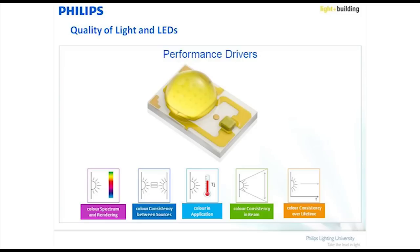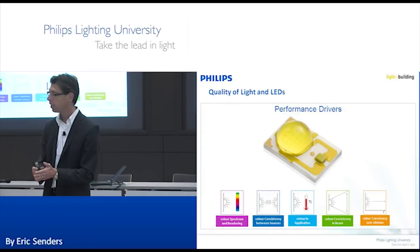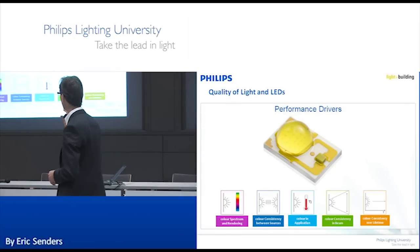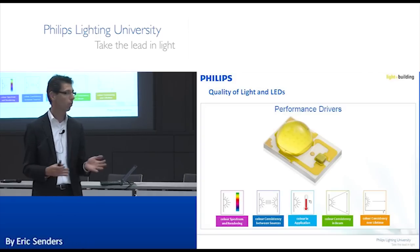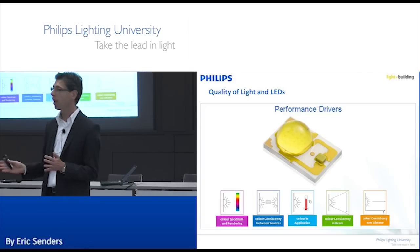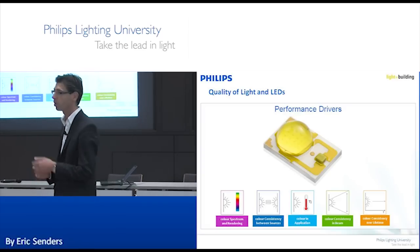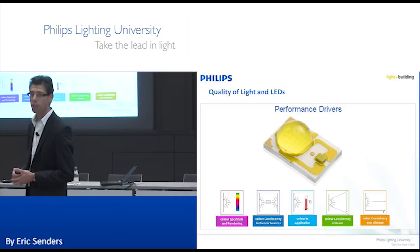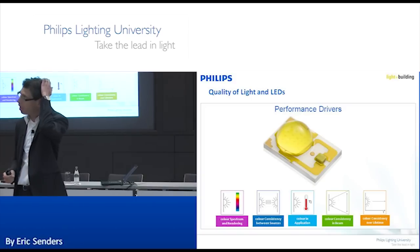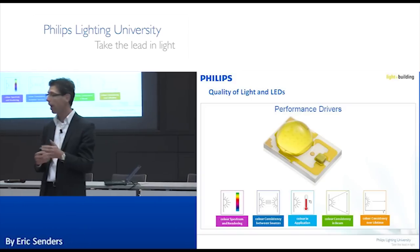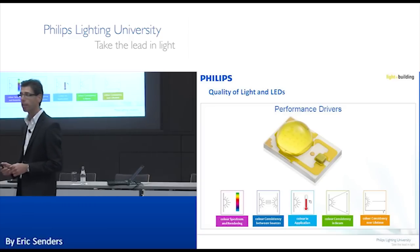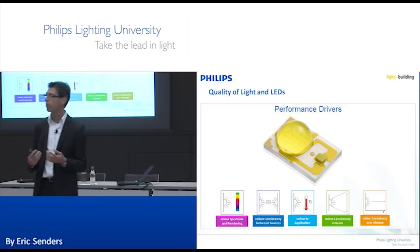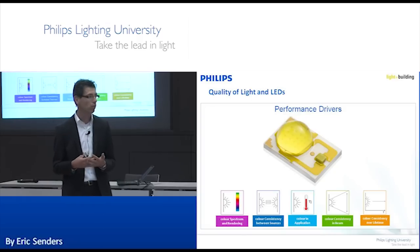The last element is color consistency over lifetime. What does an LED do initially is fine, but what if one fails? What is going to happen over its lifetime? We've seen color shift with traditional sources like fluorescent and CDM, so the question is: how does it work with LED lighting? Those are the five elements of quality I want to discuss.